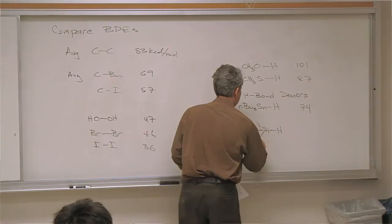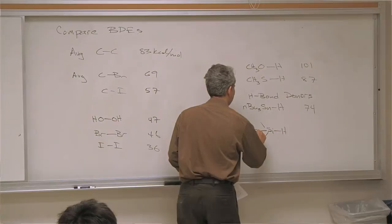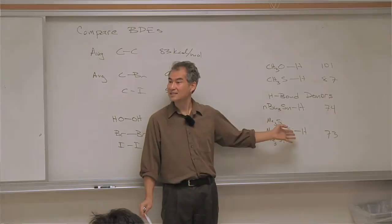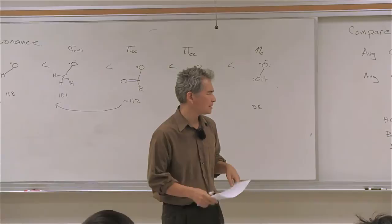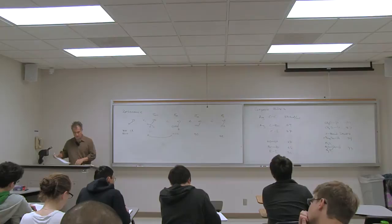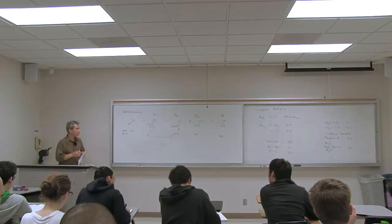Some people don't like tin because it's toxic. If you don't want to use tin, you can use tris(trimethylsilyl)silane — it looks really crazy with all those silicon–silicon bonds, but those bonds are weak and the bond dissociation energy is not that different from tin hydride. You can buy it from suppliers just like tin hydrides. So if you don't like the toxicity of tin, you can switch to that reagent.